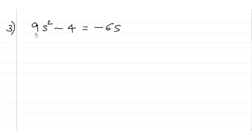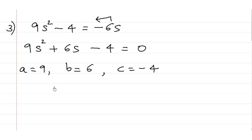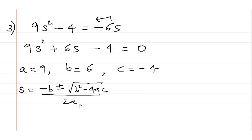Now let's have a look at the last sum: 9s² - 4 = -6s. We will take this -6s to the other side, it will become +6s. So 9s² + 6s - 4 = 0. The values are: a = 9, b = 6, and c = -4. Since the variable is s, using the formula method: s = (-b ± √(b² - 4ac)) / 2a. No need to memorize the formula, just practice a few sums and you can learn the formula directly.